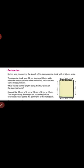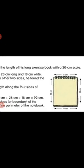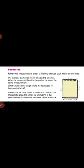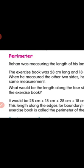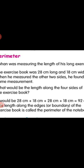Rohan wants to measure the length of his exercise book with a 30 cm scale. The exercise book is 28 cm long and 18 cm wide. When he measured the two other sides, he found the same measurements: 28 cm, 18 cm, 28 cm, and 18 cm. These are the measures of all four sides of the notebook. The total length along all four sides would be 28 cm plus 18 cm plus 28 cm plus 18 cm, which equals 92 cm.